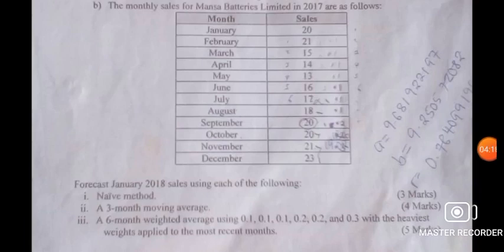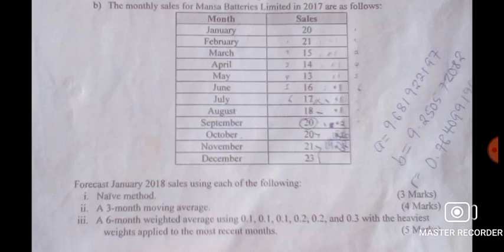For the six-month weighted moving average, weights are multiplied against the sales figures. The instruction says the heaviest weights are applied to the most recent months. So December, being the most recent, gets the largest weight, and weights decrease going back toward July, the sixth month. You assign the biggest weight to December and decrease from there.